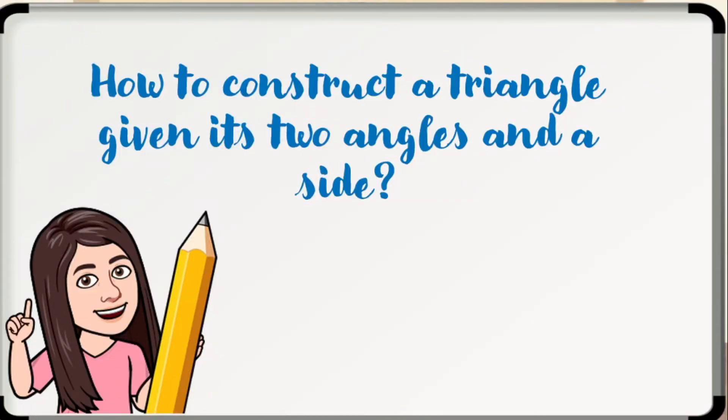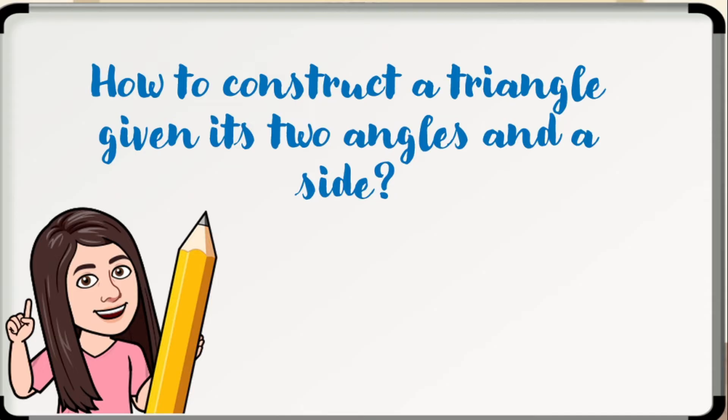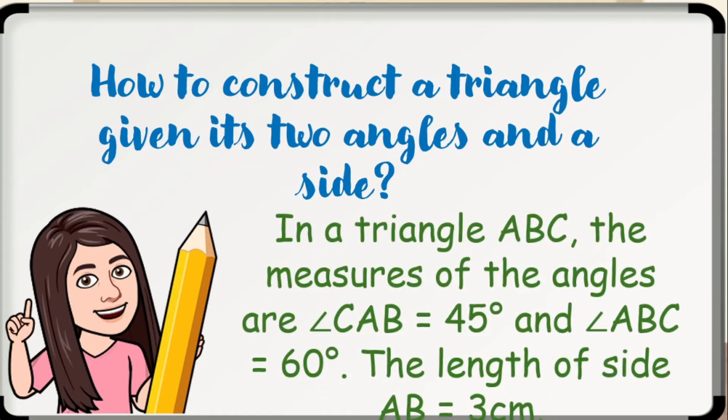How to construct a triangle given its two angles and a side? For the ASA or angle side angle criterion to be satisfied, the given side must necessarily be the one that is enclosed by the known angles. The criterion does not hold if any of the other side's measurements is provided. You will be needing a ruler and a protractor to construct this triangle. Let us say, in a triangle ABC, the measures of the angles are, angle CAB is equal to 45 degrees, and angle ABC is equal to 60 degrees. The length of the side AB is equal to 3 centimeters.